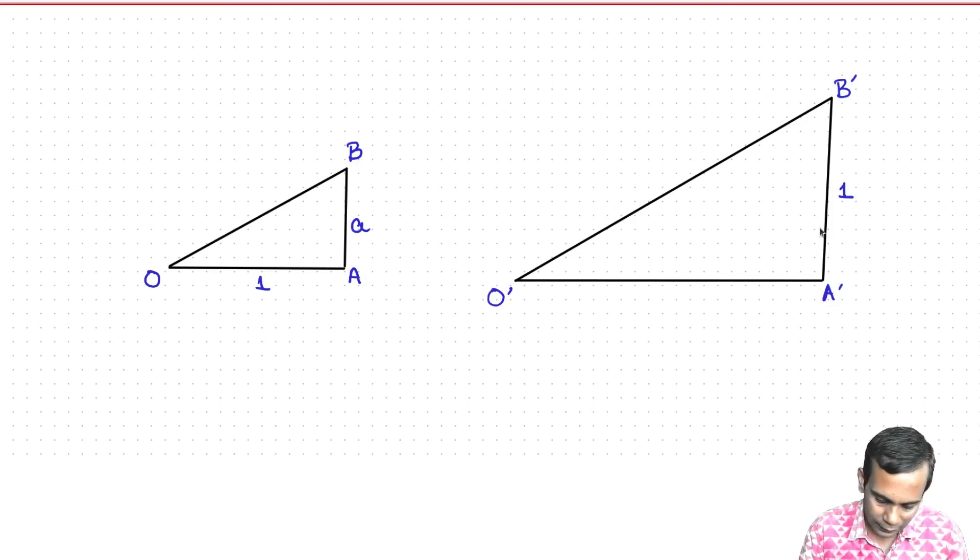Now if this vertical, now the ratio A over 1 is the same as the ratio of 1 over this edge O prime A prime. So that means that this O prime A prime is of length A inverse.